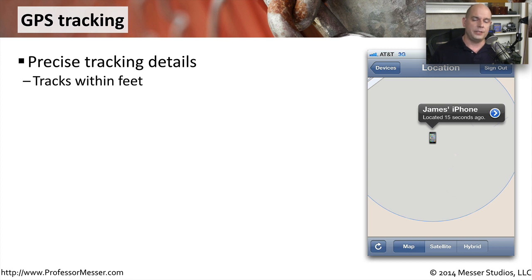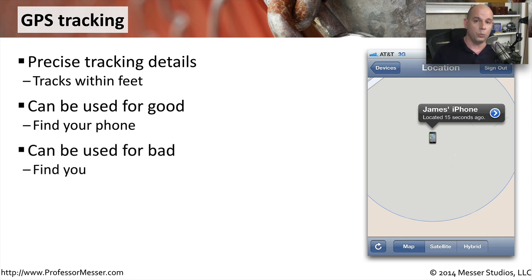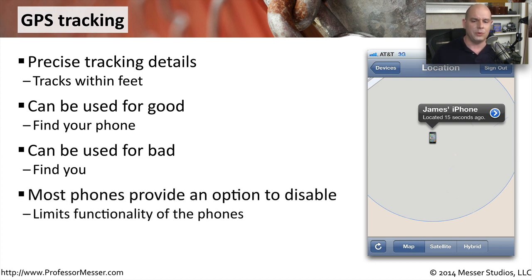If you've ever lost your phone or tablet, you know there is great GPS functionality built right into the technology. You can get very precise tracking information that will get you back to the device within a few feet. This can be useful for your organization so that if somebody loses their phone, you can redirect them to where it might be, or know where people are at any time during the day. But they can also be used for bad reasons — tracking where you're going and what you're doing. If this is a company-owned device or a BYOD, you may not have a choice; it may be on all the time so the organization knows where their applications and data are.